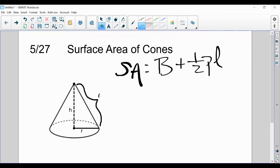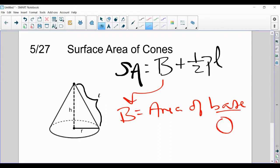Just like we saw with prisms, the capital B stands for the area of the base. And for a cone, the area of the base is always a circle. So the area of the base is always going to be pi r squared.